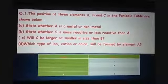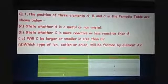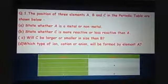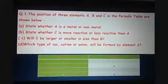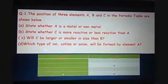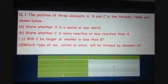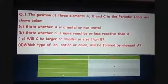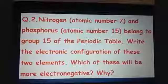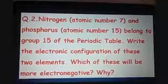Part D: which type of ion, cation or anion, will be formed by element A? As we have discussed, A is a non-metal, so it will form an anion only.